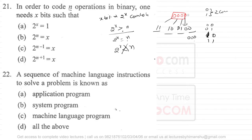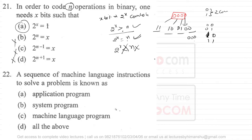In the same way, if there are n operations and 2 raised to power x is greater than or equal to n, then we can give a unique combination to each operation. Regarding the options given, options B, C, and D appear wrong. Option A seems to have a printing mistake — it should read '2 raised to power x is equal to n,' and then option A would be the correct answer.